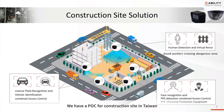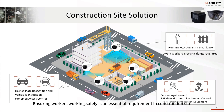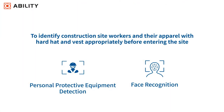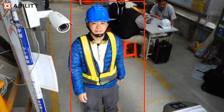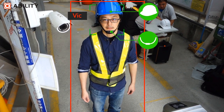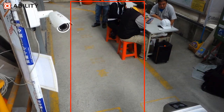We have a POC for a construction site in Taiwan. Ensuring workers' safety is an essential requirement on construction sites. We offer face recognition and personal protective equipment (PPE) detection. This video shows the PPE function, which detects hard hats, vests, and buckles, and combines with access control to check that workers have complete PPE at the entrance.